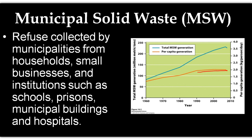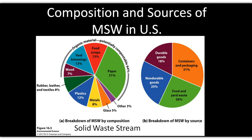Looking at municipal solid waste, about 64% of this material is actually recyclable. The largest component by composition is paper at 31%. Looking at waste by source, containers and packaging — many times unnecessary — make up 31%, so we can reduce this material just through smart practice.